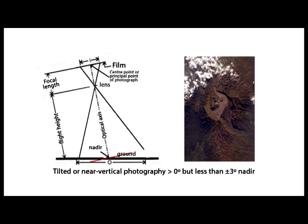Scale is the ratio of distance between two objects on an aerial photograph and the actual distance between the same two objects on the ground. In other words, it is the ratio of focal length of the camera lens and flying height of the aircraft from the datum. Due to variations in flying height, the scales of different photographs may vary, and scale may also vary because of the effects of tilt and relief displacements.